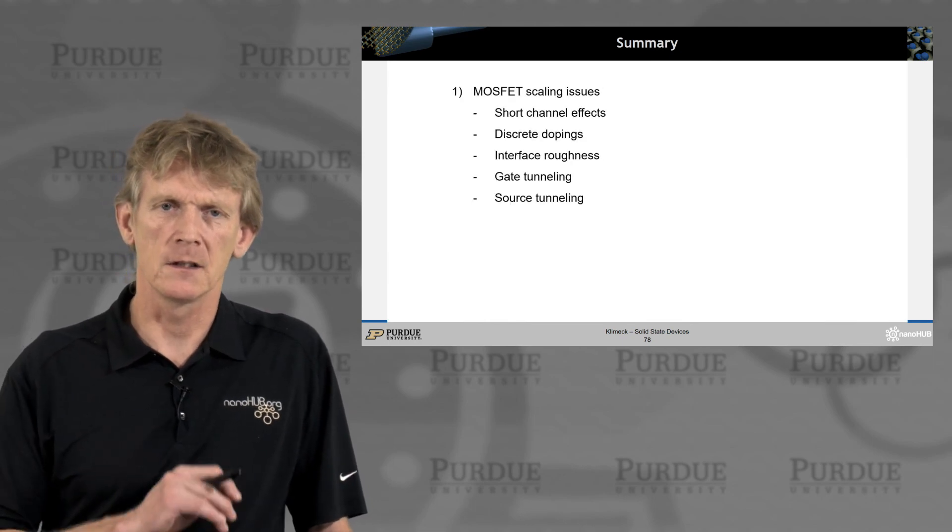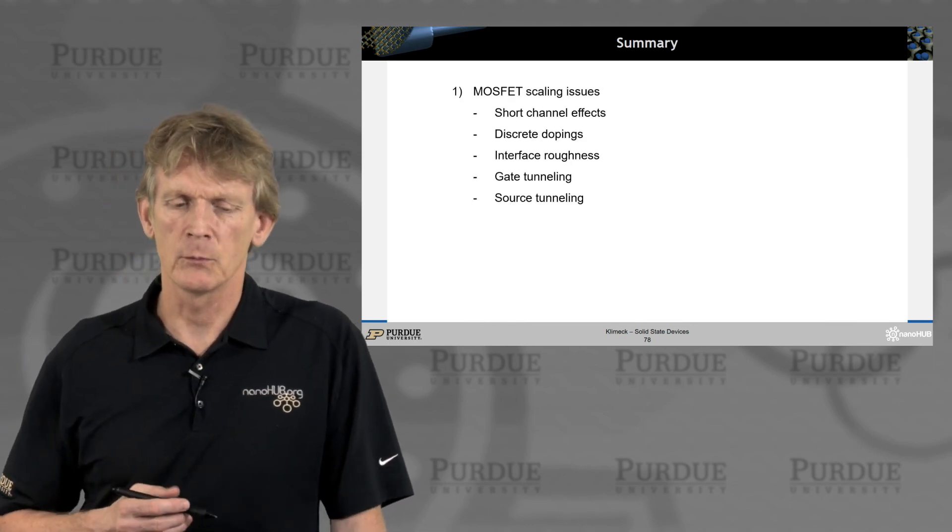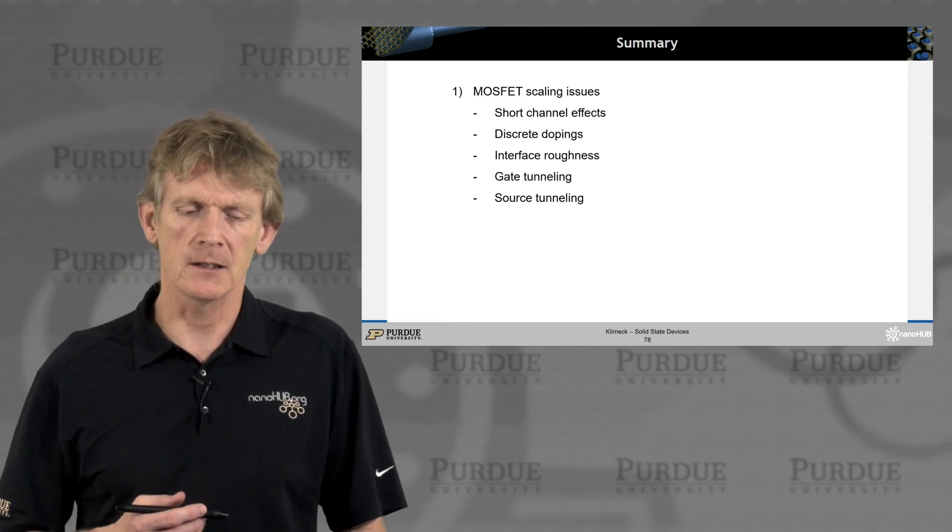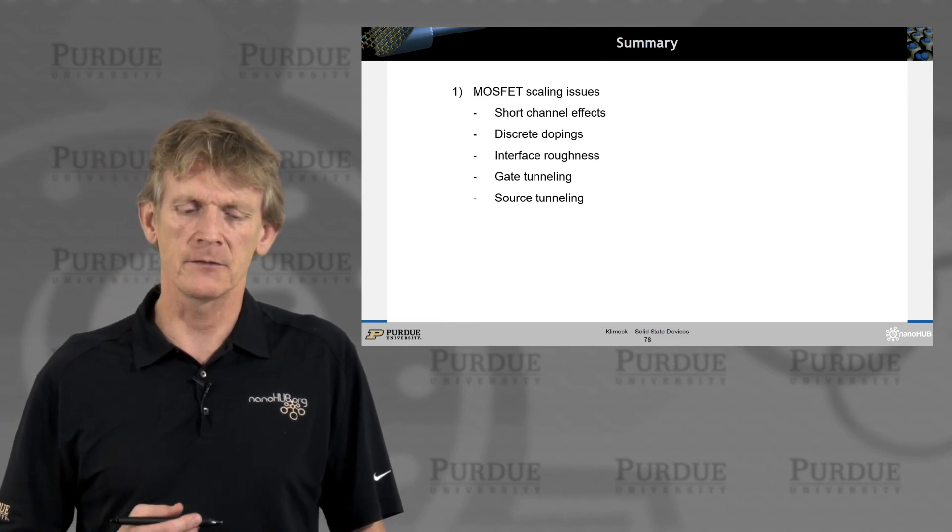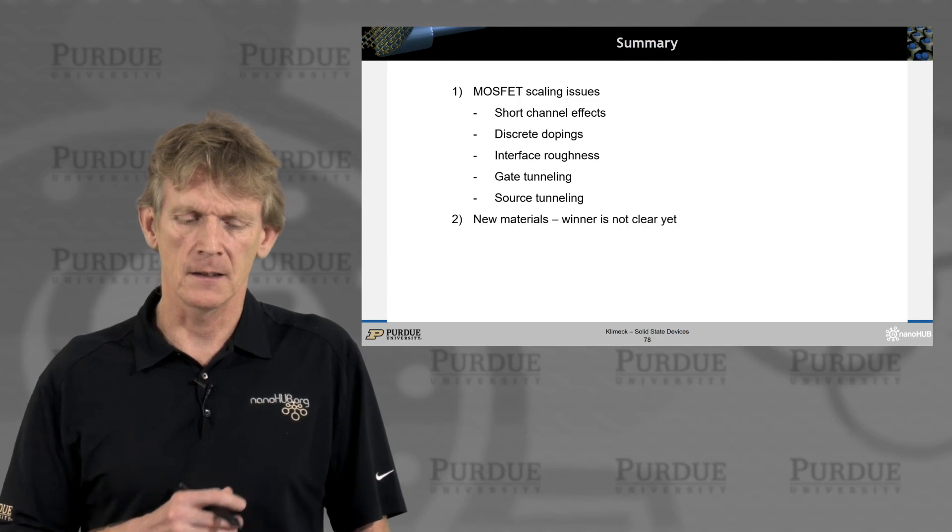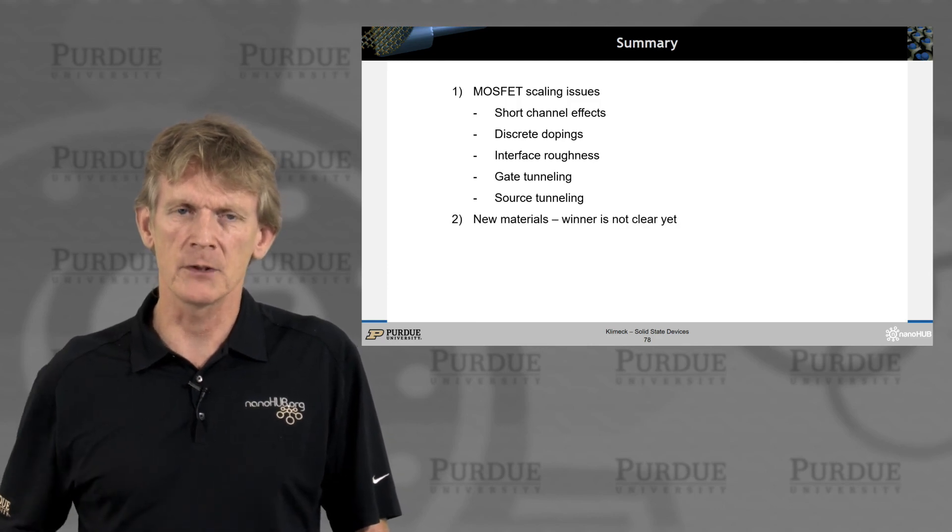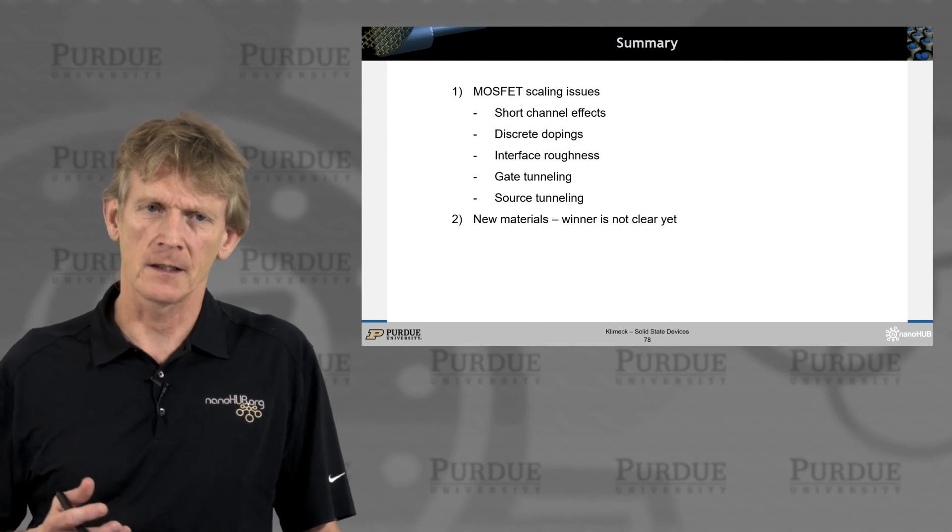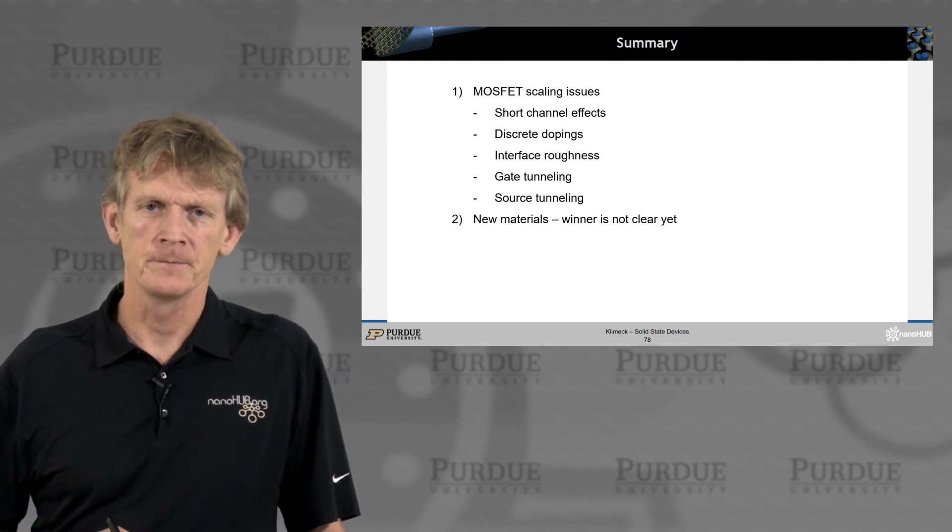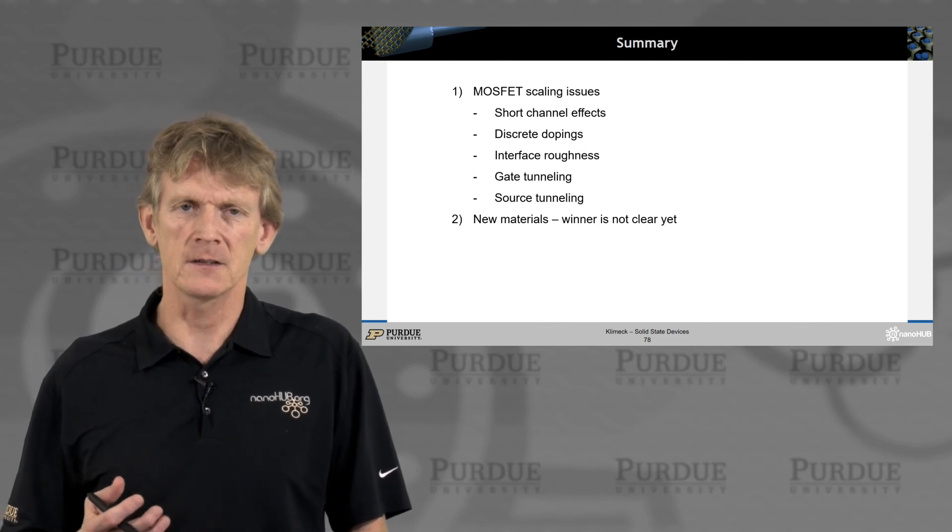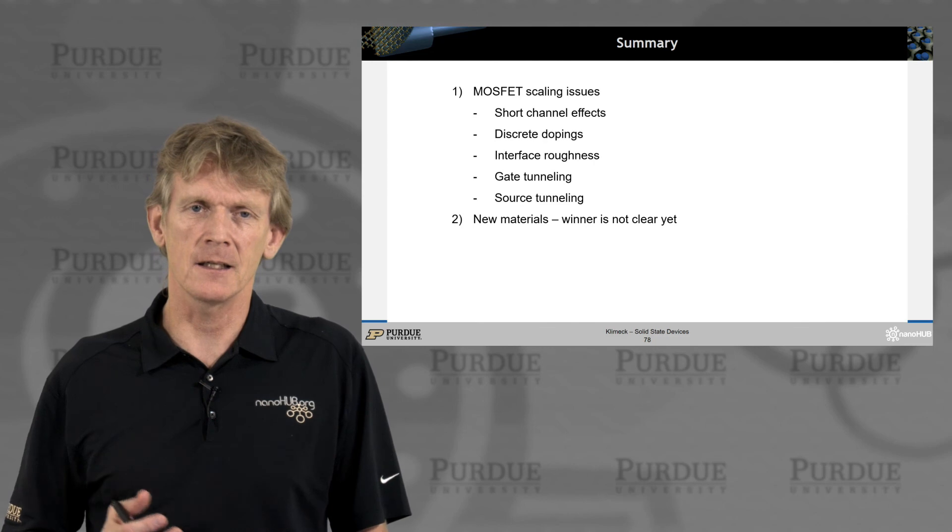So let me summarize the last segment. MOSFETs have pretty strong scaling issues of making them any better and shorter. There's short channel effects, there's discrete doping effects, there's interface roughness, there's gate tunneling, there's source tunneling, and new materials are being discussed. There's no winners yet. In fact, I would argue the winner will be silicon. And there's different architecture I talked about, like a tunneling FET or an NCFET. That is not clear yet either.